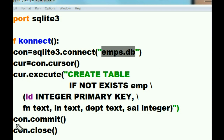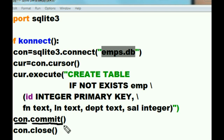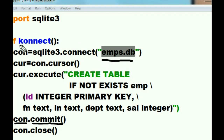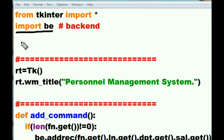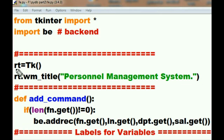Then the computer turns to con and says: would you please commit all those changes — write them to the disk? If the table already existed, there are no changes to commit. But if the table was just created, con writes it all to disk. Then con is asked to close the connection to the emps database. That's everything that happens in the connect function, every single time you run this program.